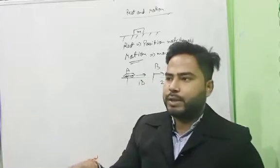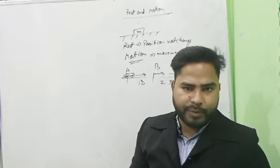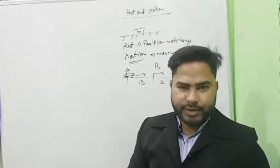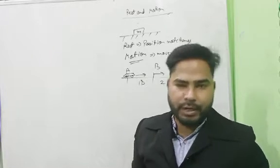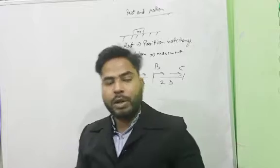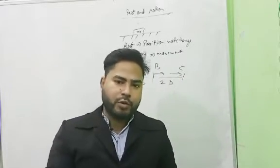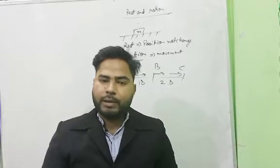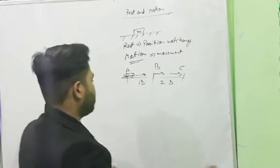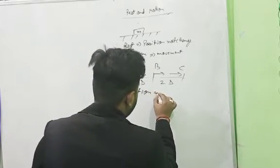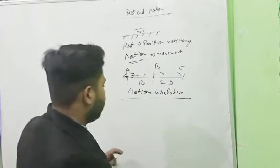Suppose you are sitting in a moving train. The distance from you to the compartment walls is fixed, so you are at rest with respect to the compartment. But when you see the platform, the distance from the platform continuously changes — you are in motion with respect to the platform but at rest with respect to the compartment or train. This shows that motion is relative.